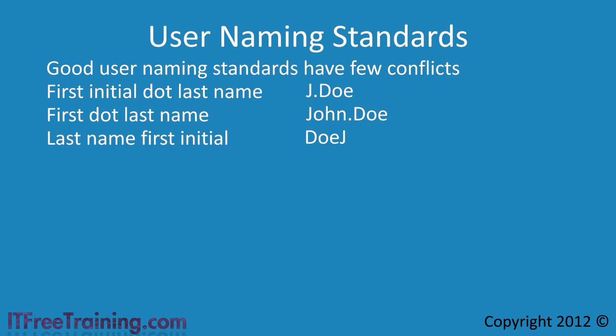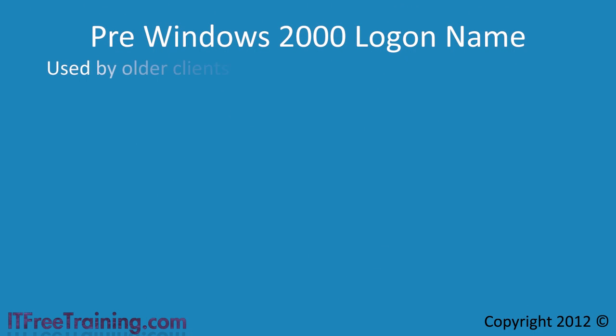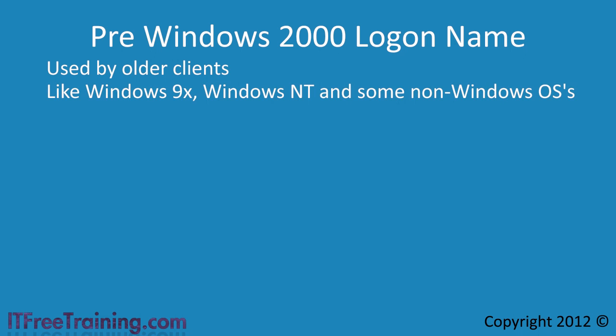When creating a new user, a pre-Windows 2000 login name will automatically be chosen for you. This name will be used by older clients, besides Windows systems like Windows 9X and NT — this may also include some older non-Microsoft operating systems. Unless you have any old operating systems, in most cases you won't need to worry about the pre-Windows 2000 logon name. The reason I bring it up is that it is limited to 20 characters. In your naming standard, if you need to use pre-Windows 2000 logon names, consider the 20 character limit when thinking about how your naming standard will work.